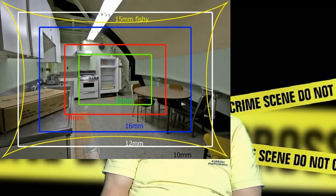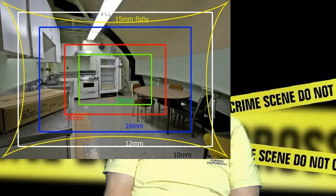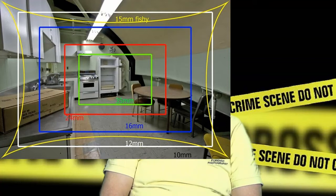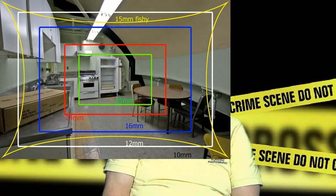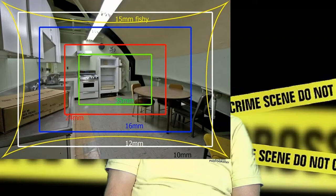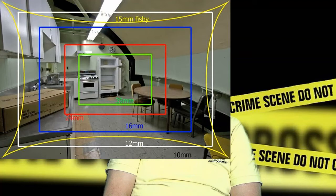Then you get to 12 millimeter, which gets wider angle, and you're capturing more of the scene, and it's more true and accurate onto your digital media. And then the 10 millimeter lens captures the widest possible area onto your digital media.